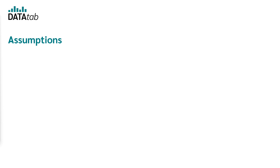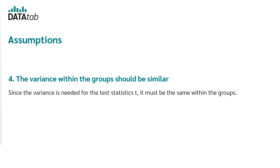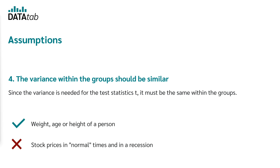The fourth assumption is that the variance within the groups should be the same. Since the variance is needed for the test statistic t, it is important that there is equal variance within the groups. This could be the case for weight, age, or height of people. But stock prices in normal times and in a recession may have different variances.